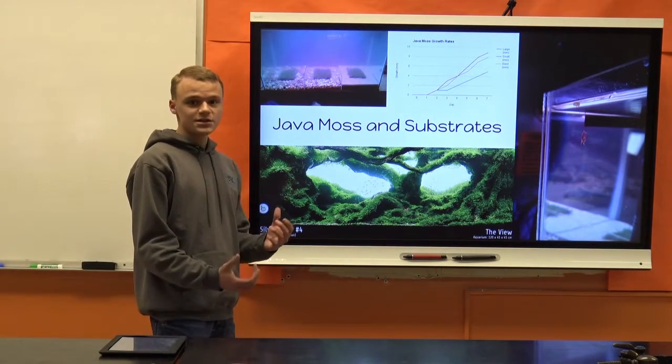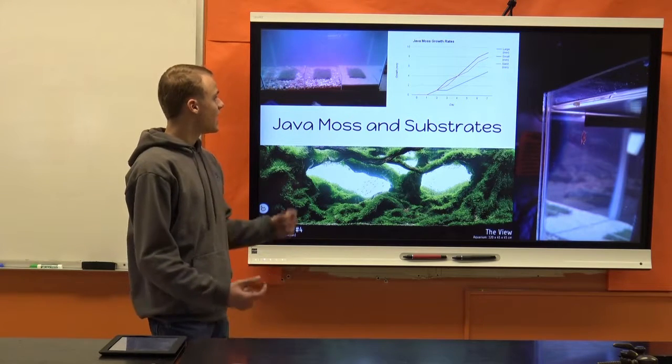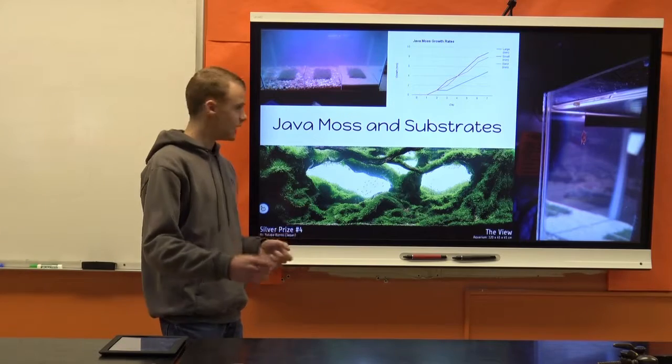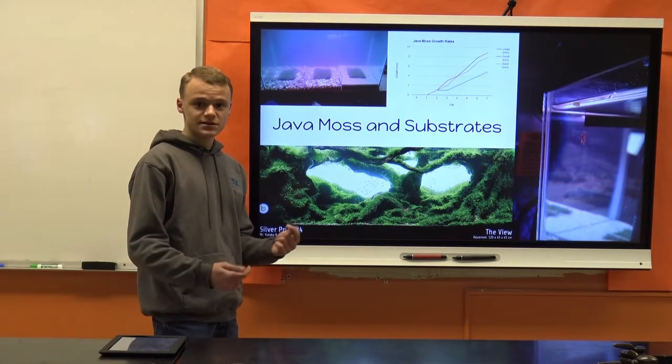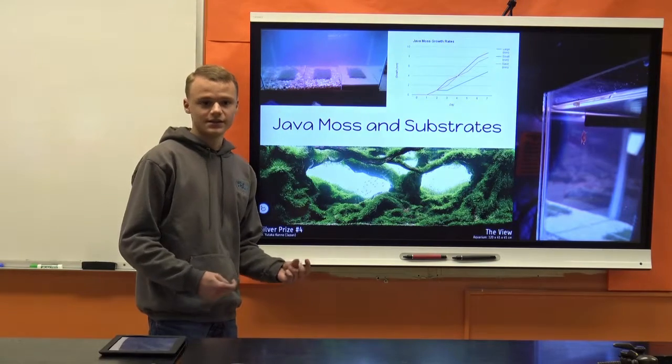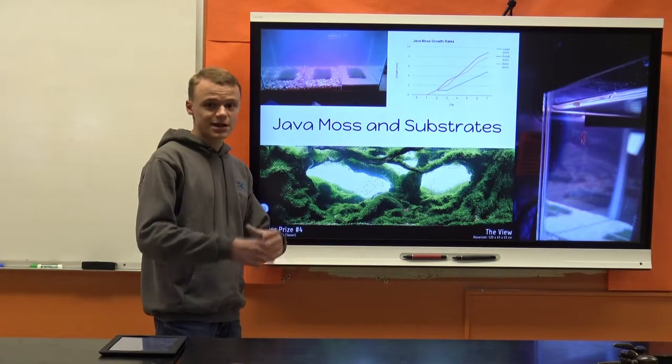So, I knew that java moss can grow on pretty much any surface, but I hypothesized that it would grow the same in all different substrates because the nutrients that java moss needs to grow, like carbon dioxide and sunlight and other things, that doesn't come from the substrate.